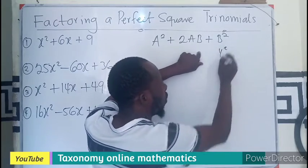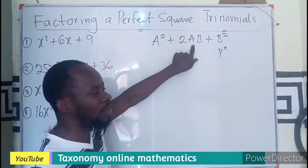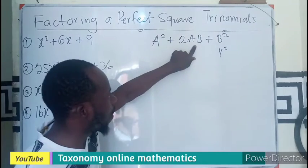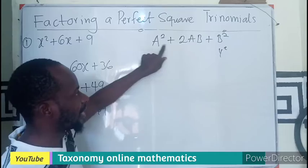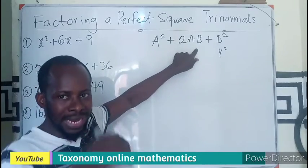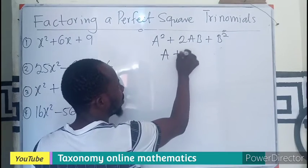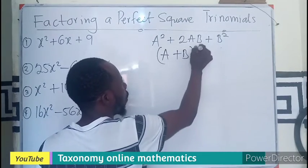The moment you can see the four and the A—twice of them in the middle—then it means that this expression is nothing but A plus B all squared.